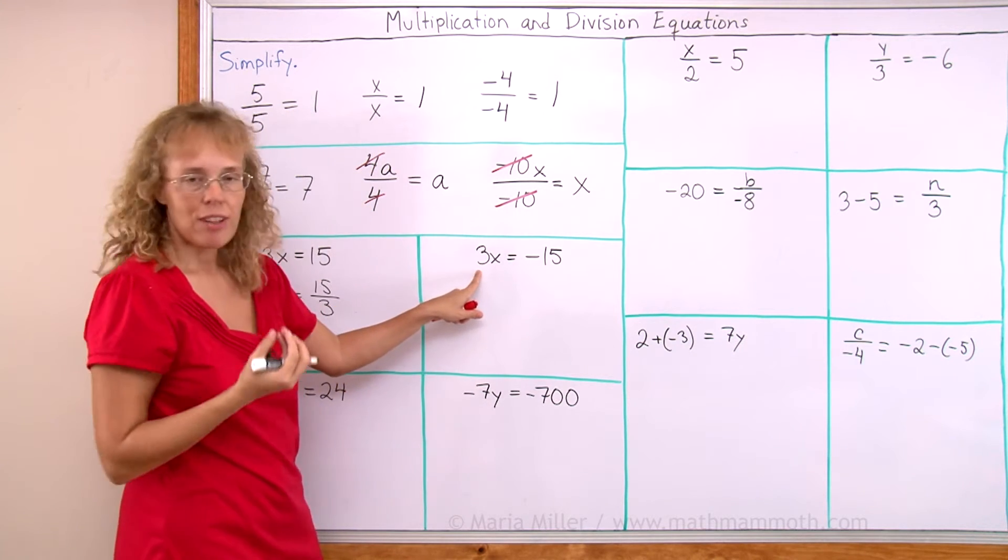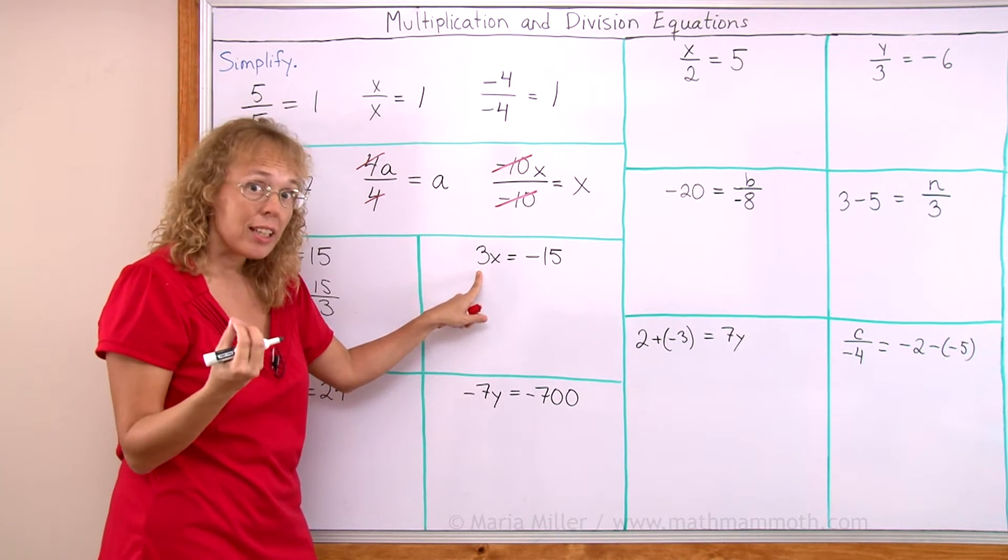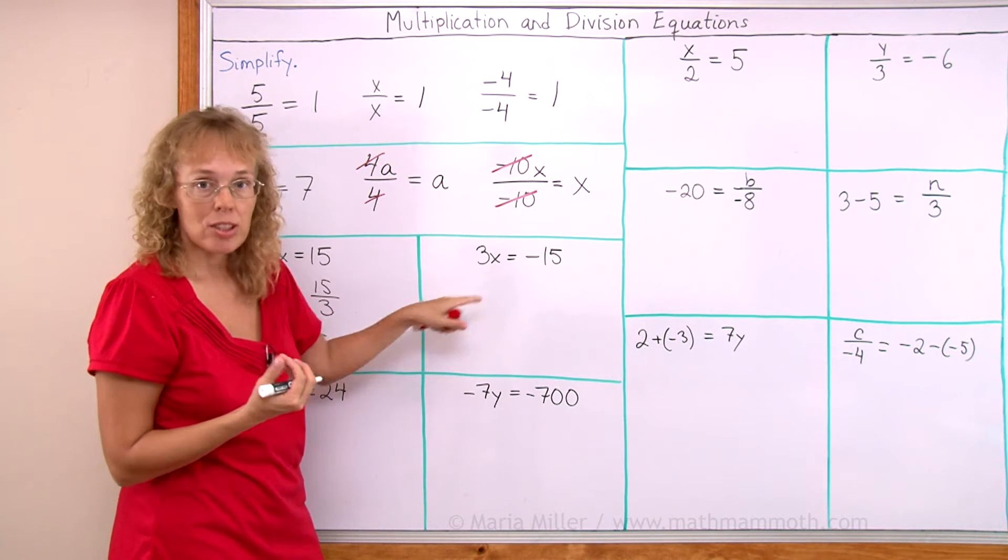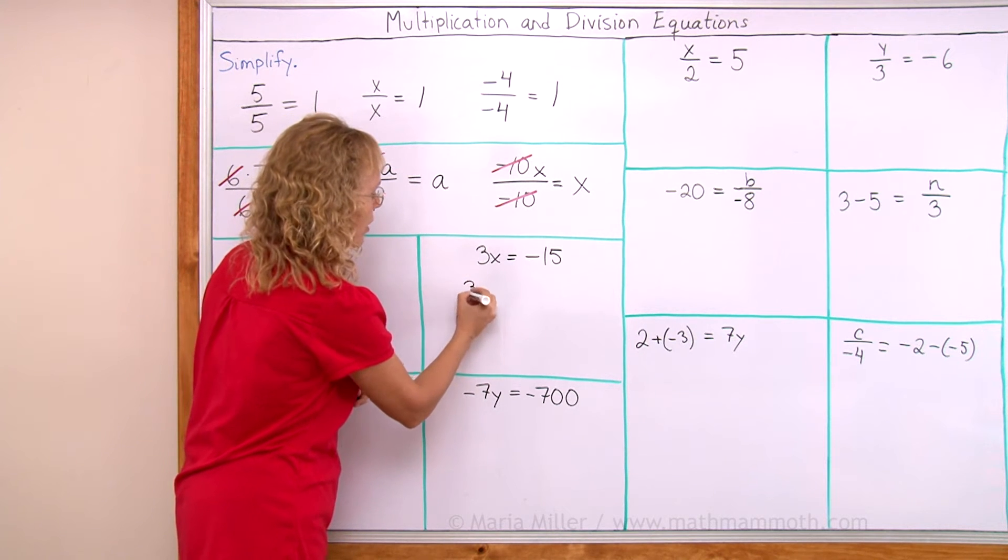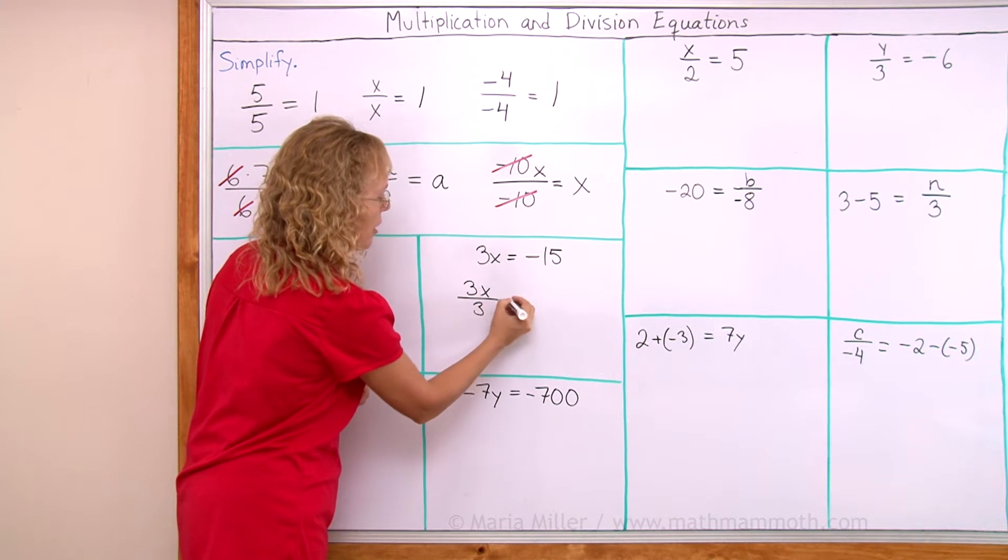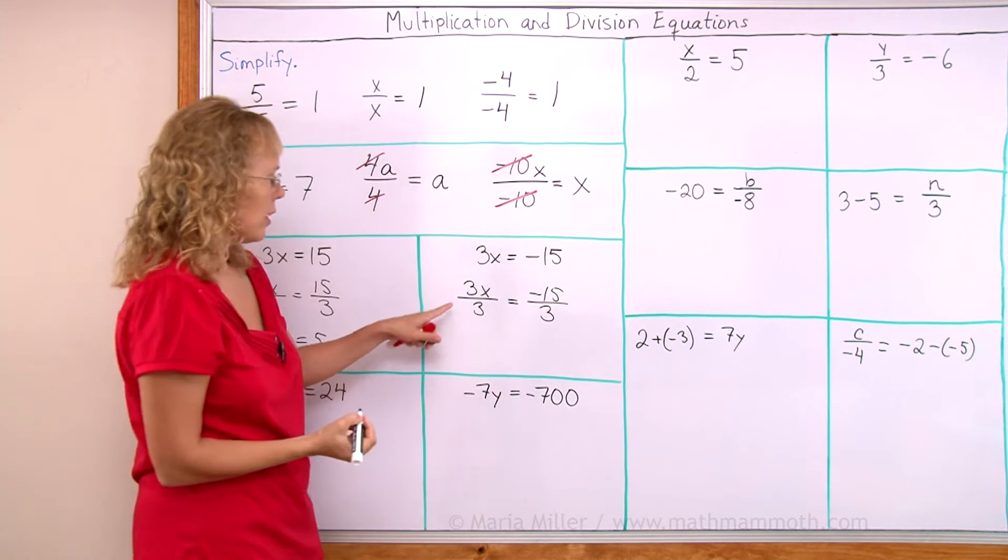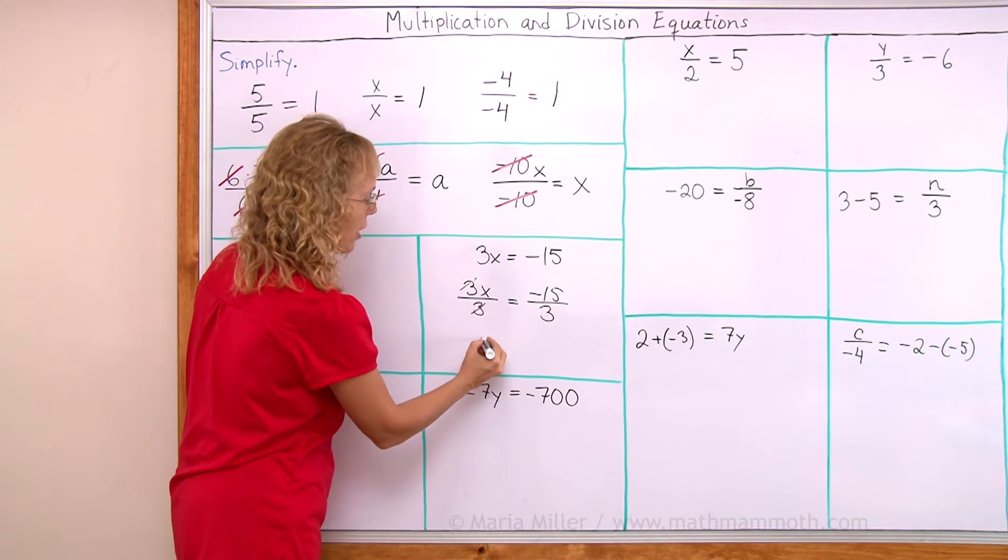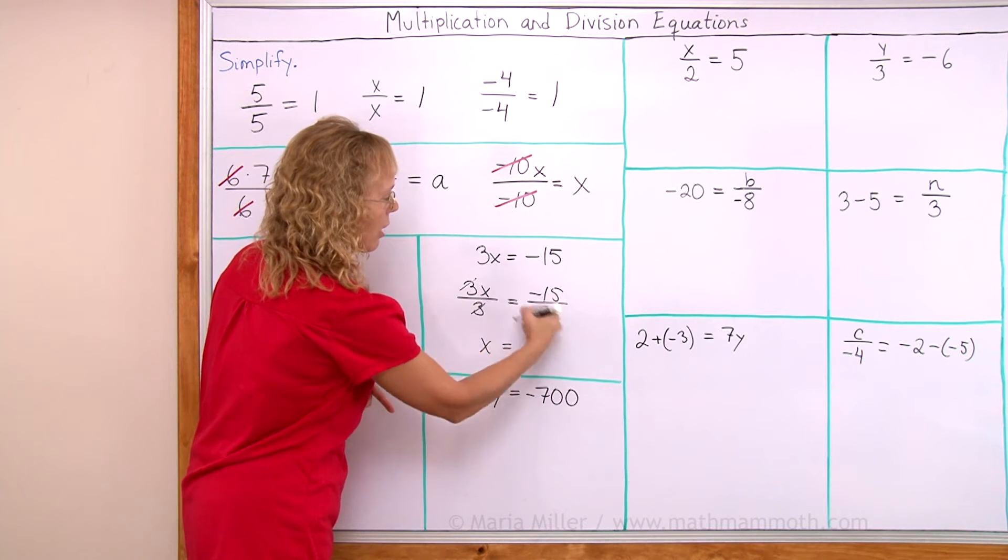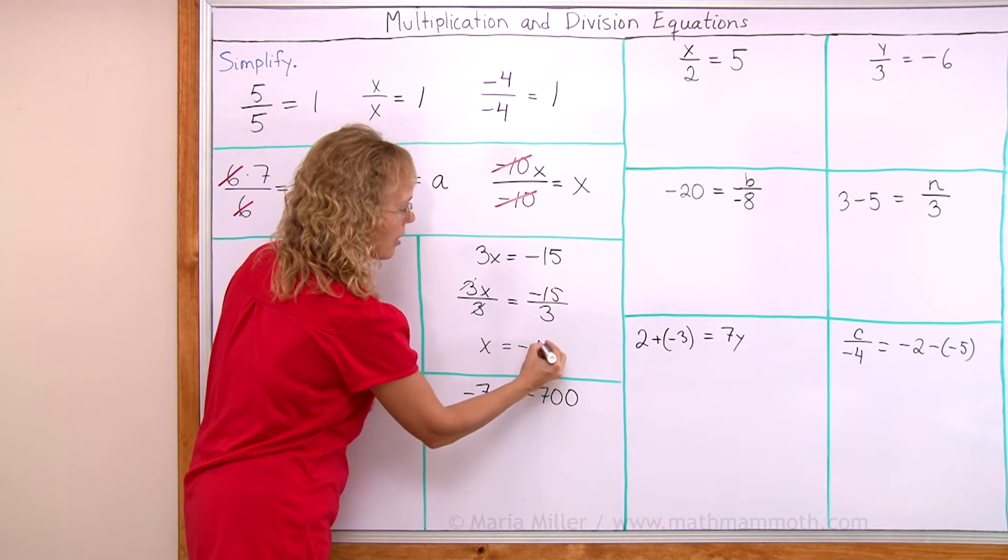Let's do the same with negative 15. Again, I need to do the same. I need to divide both sides by 3 in order to undo the multiplication by 3 that there is. So, 3x divided by 3. And here, negative 15 divided by 3. This, of course, again, the 3s cancel, leaving x alone. And here, we calculate this. And now, this time, it is negative 5.